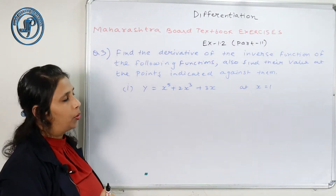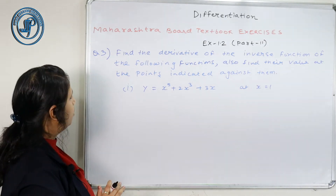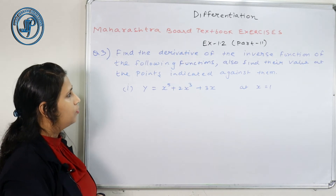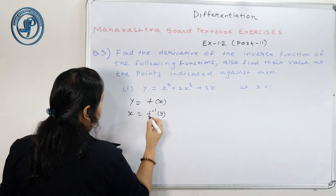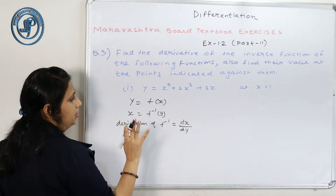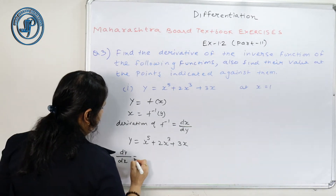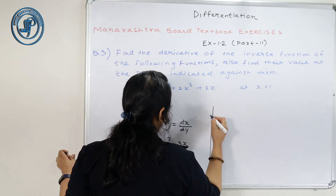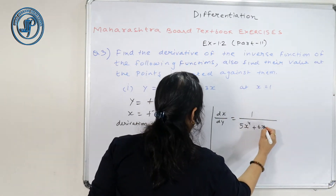देखते हैं question 3. Question 3 में भी find the derivative of the inverse of the following functions, but साथ में इसमें उनकी value at indicated points भी find करनी है. y equals to fx, so x equals to f inverse y. Derivative of inverse function = dx upon dy. dy by dx क्या हो जाएगा? 5x raise to 4 plus 6x square plus 3. So dx upon dy = 1 upon (5x raise to 4 plus 6x square plus 3).